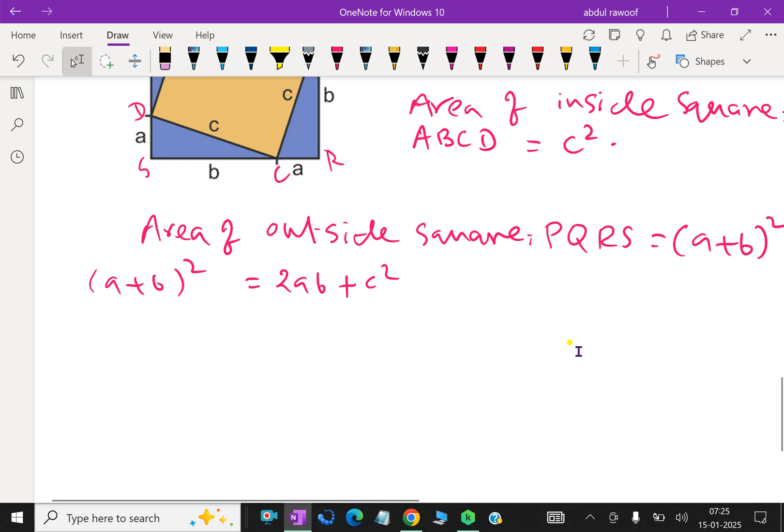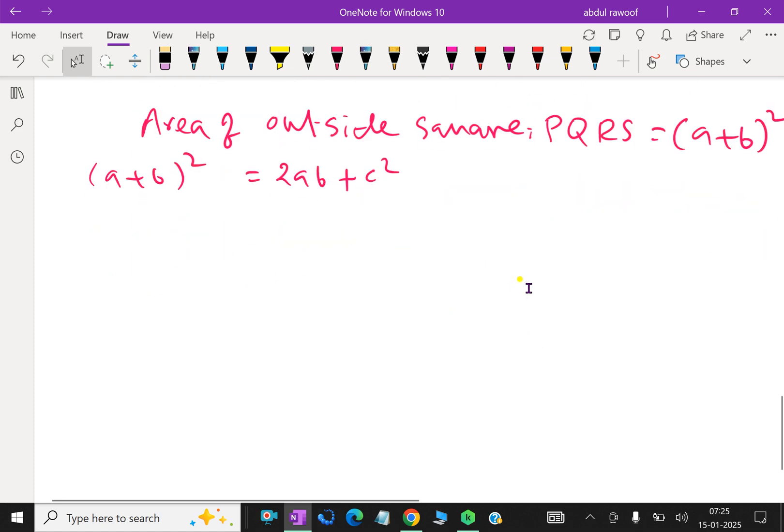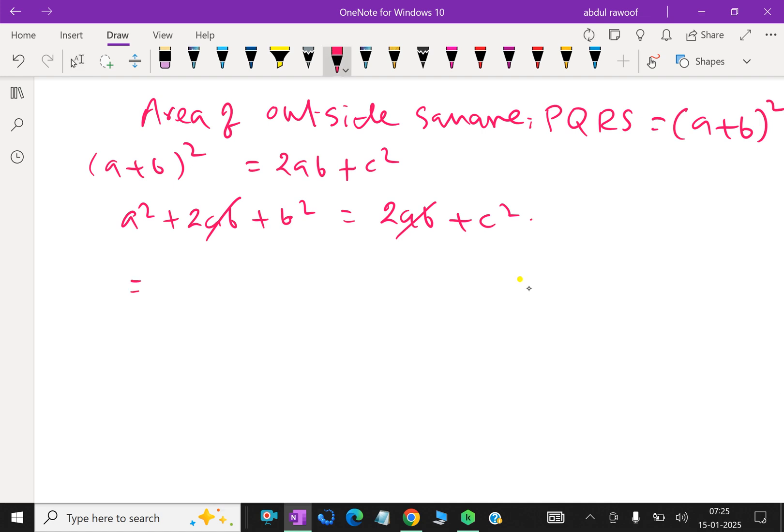By algebraic method, we are proving this Pythagoras theorem. We know that (A + B)² is A² + 2AB + B². This side is 2AB + C². Then 2AB both sides same, then cut. Remaining, A² + B² = C². Hence proved.